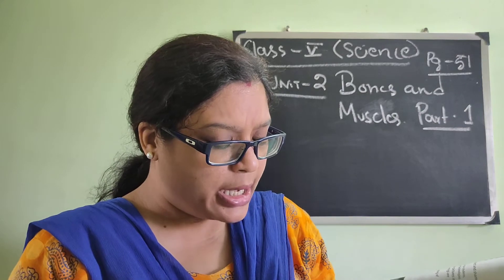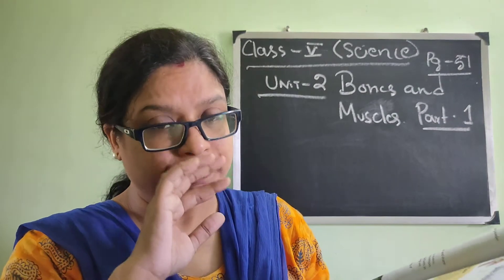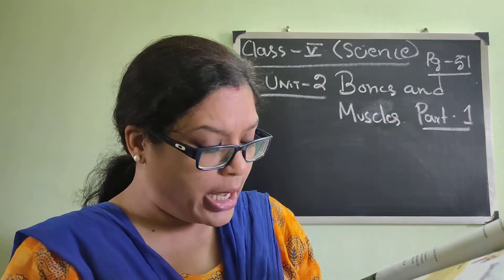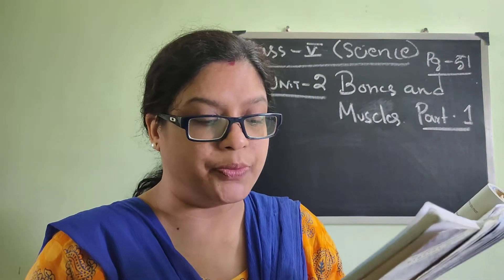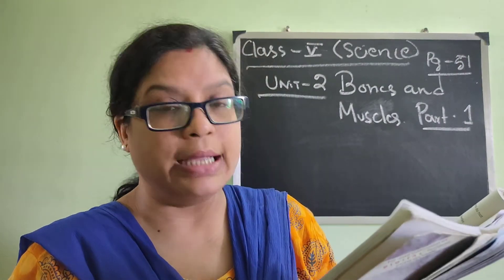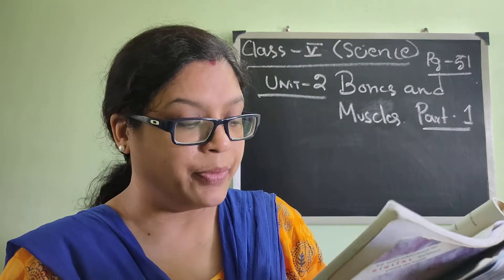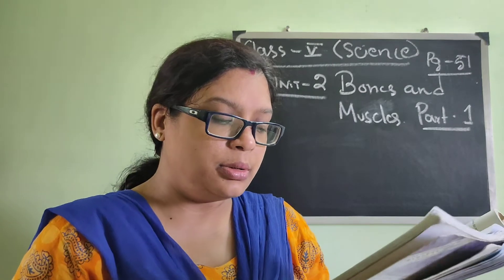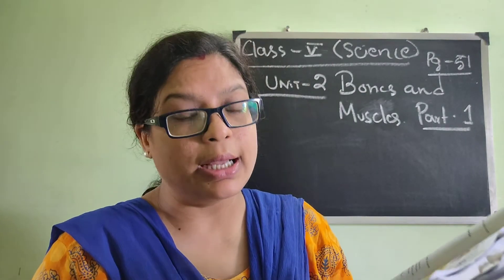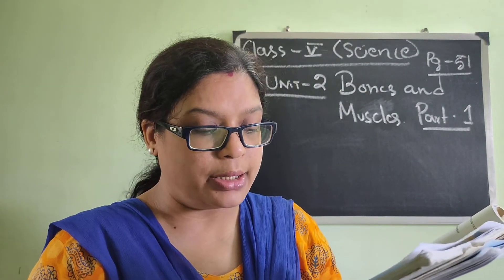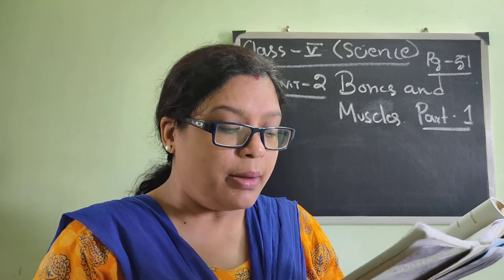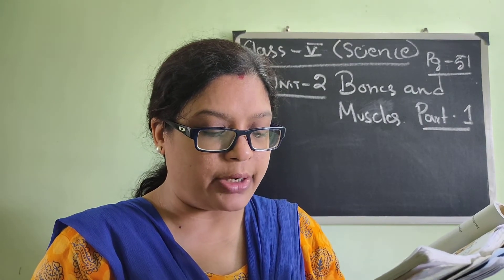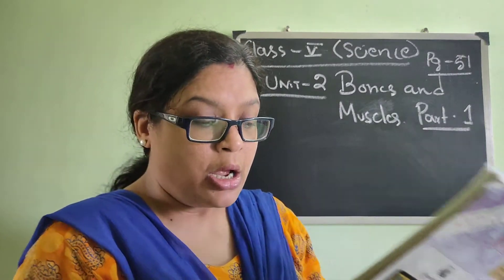These organs working together form an organ system. The organs which help to digest food together form the digestive system. The main systems in our body and their functions are given in a table on the next page.